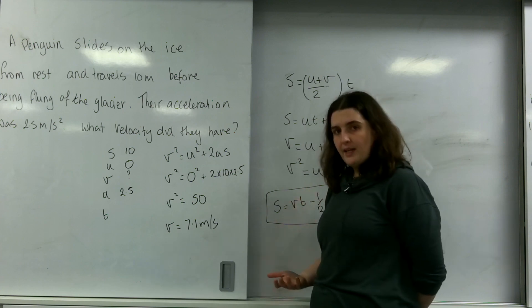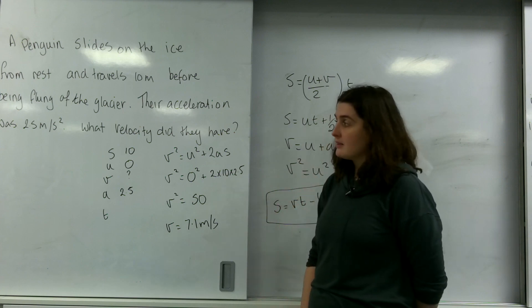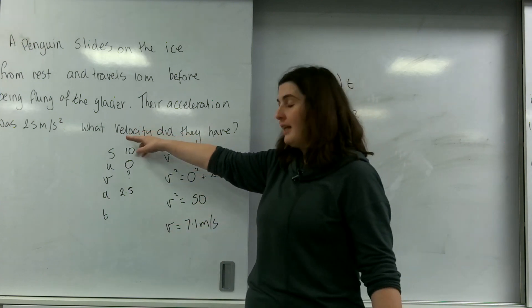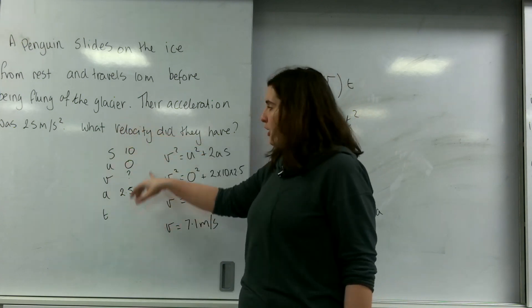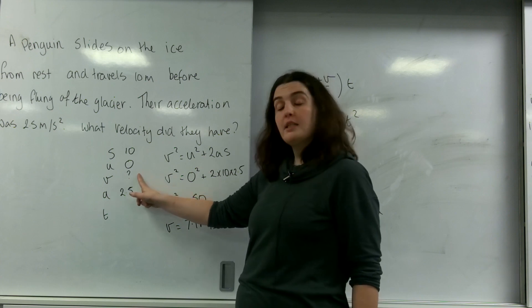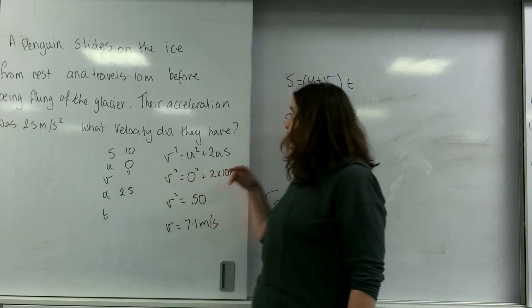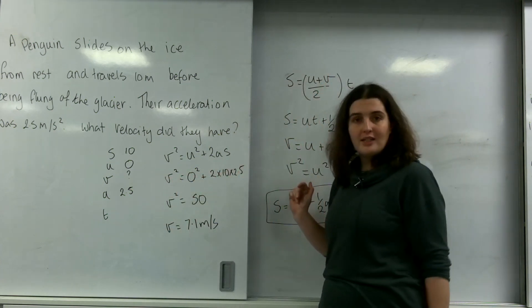So this is using SUVAT in two different formats. And it's really important that you lay it out. I lay it out in a column format. You fill in what you know, identify what you need to find out, and use formulae to find it out.